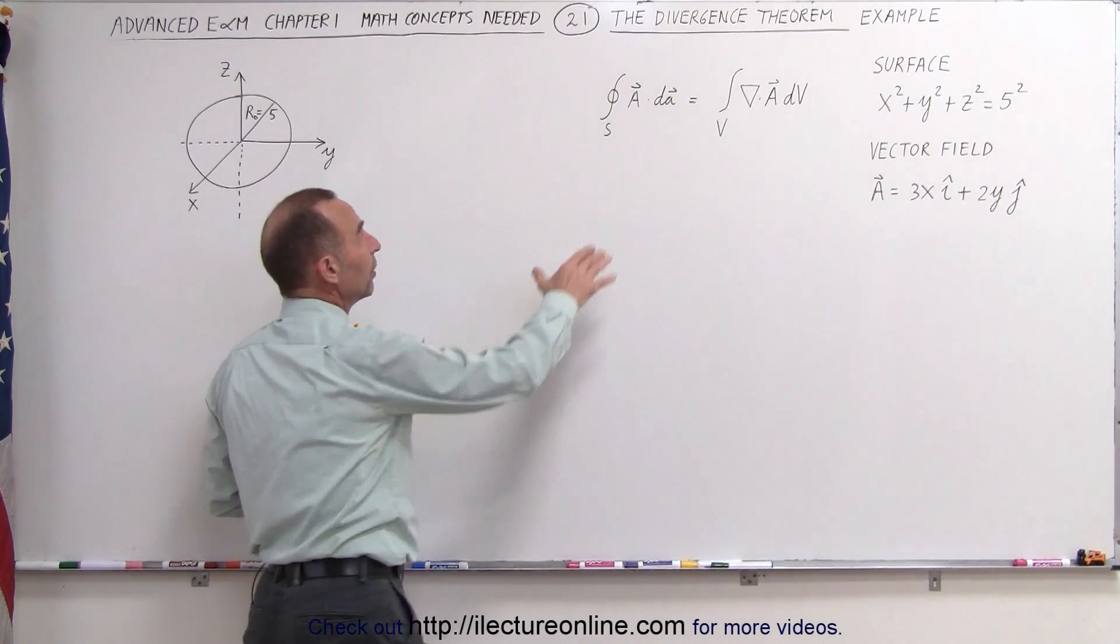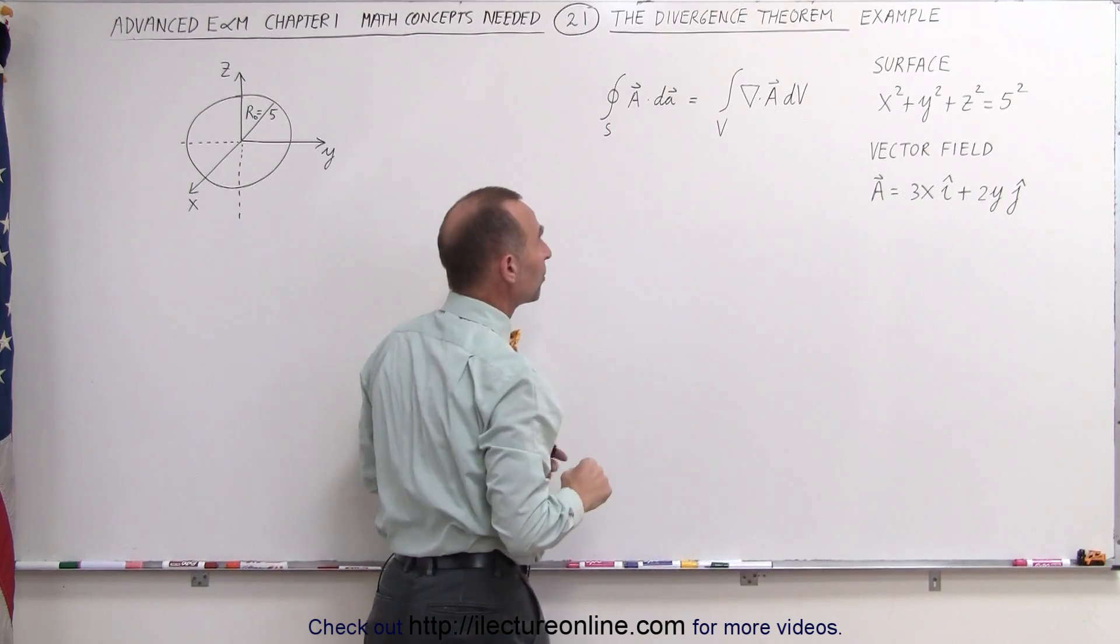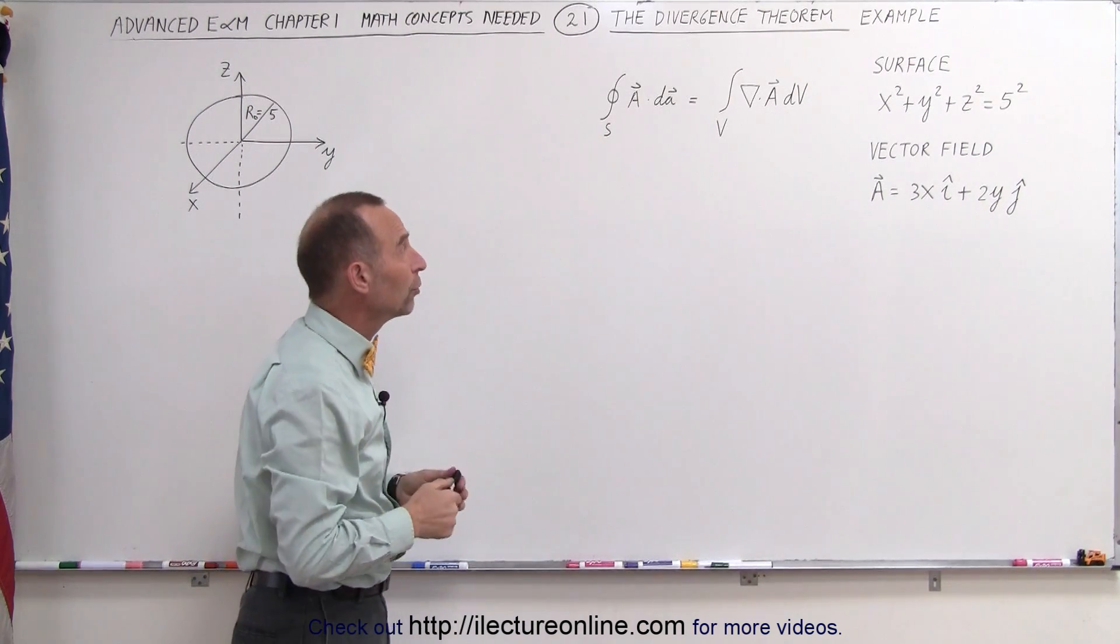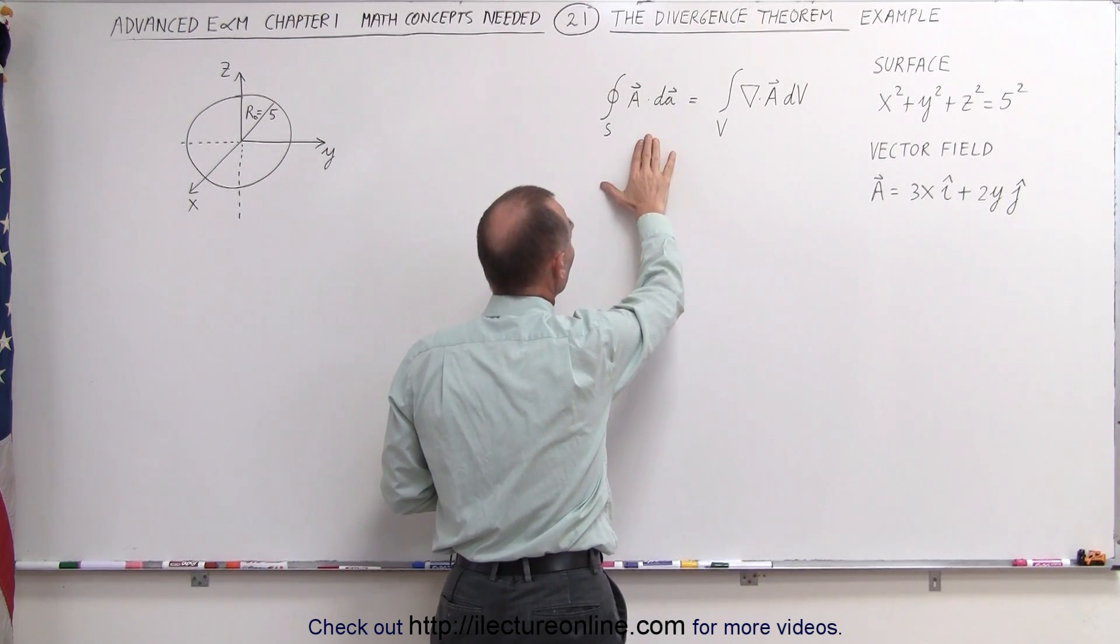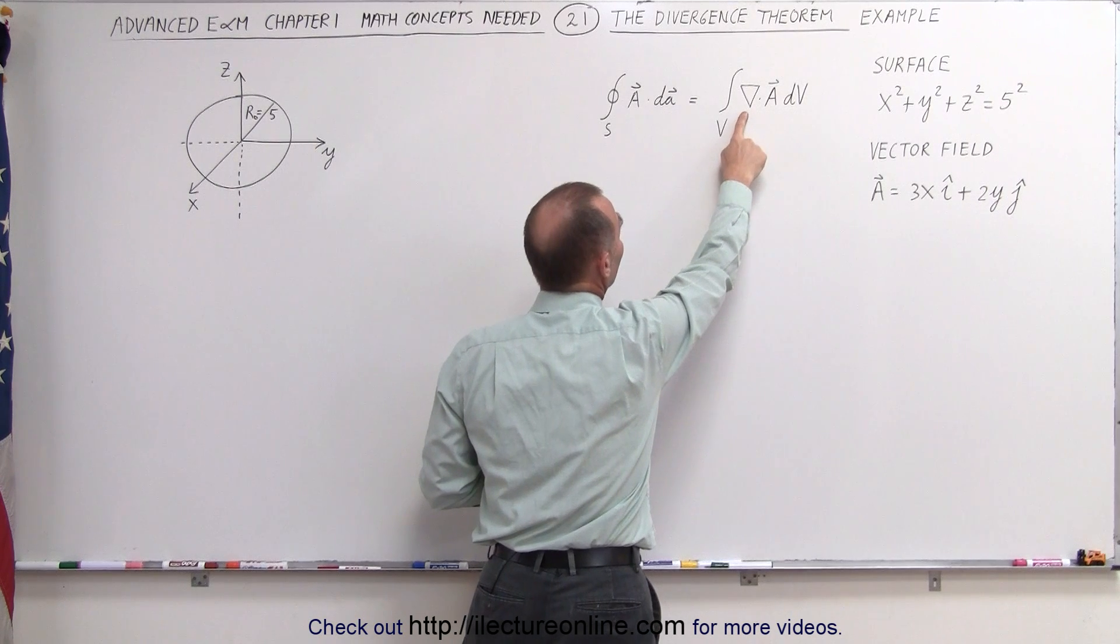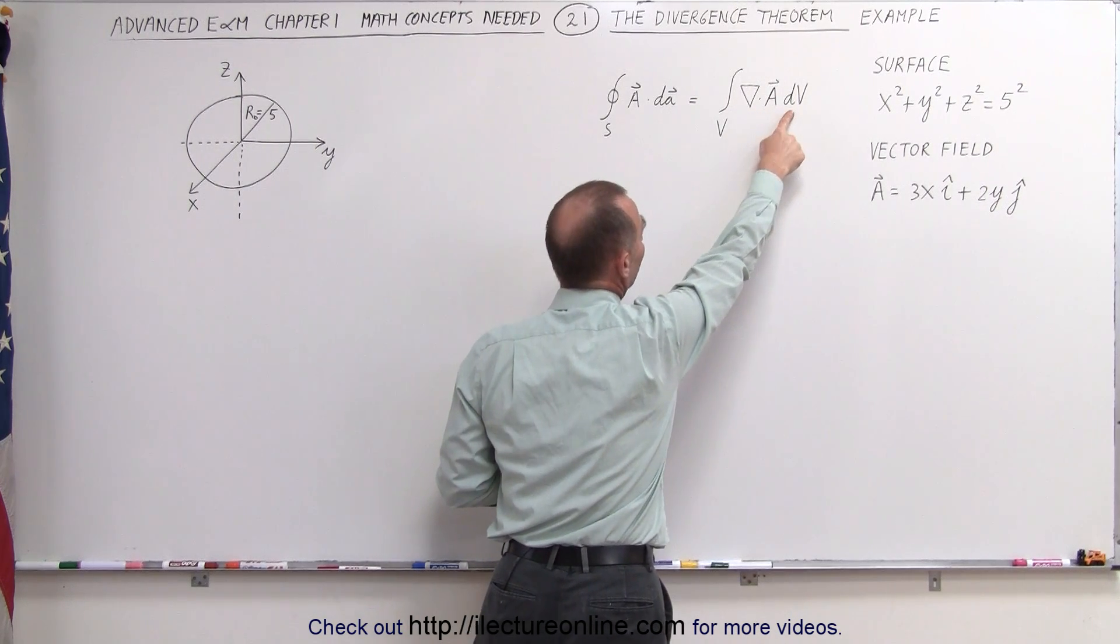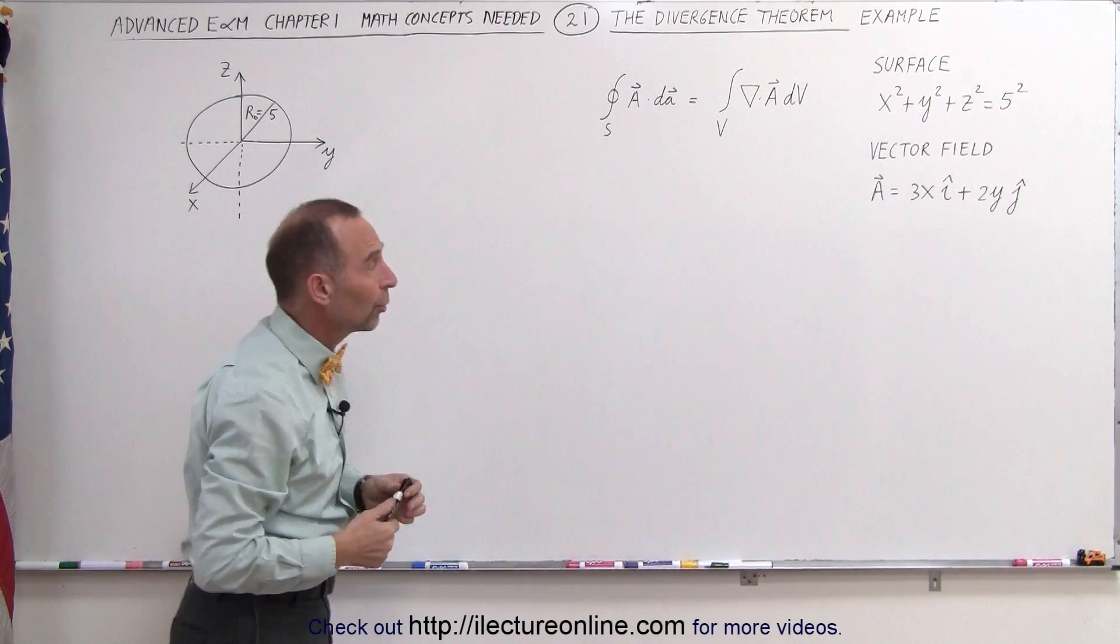Now, trying to solve the integral on the left side may be somewhat problematic and may be difficult to do. So we'll look on the right side, since we know that the divergence theorem allows us to say that this is equal to this. Let's go ahead and try to take the divergence of the vector field, multiply times the volume element, and then integrating over the volume to get the right answer.